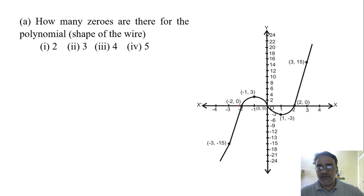So this is the first point, this is the second point, and this is the third point. So at three points it intersects the x-axis. Therefore the number of zeros is 3. So 3 is the correct answer.